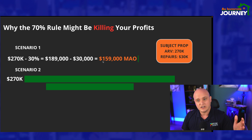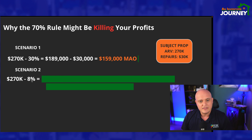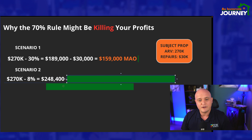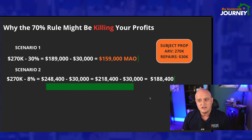That's your maximum allowable offer if you're using the 70% rule. Now as a wholesaler, you're going to have to subtract your wholesale fee from this number. So let's look at scenario number two — this is what we use. We subtract 8%, which is our closing costs. If you're using an agent, this covers agent fees and closing costs. For us it's actually less than 8% because my business partner is an agent and we get a flat fee. That gives us a maximum allowable offer of $248,400. Now subtract $30,000 profit and we get $218,400. Subtract the $30,000 in repairs, and that gives us a maximum allowable offer of $188,400.